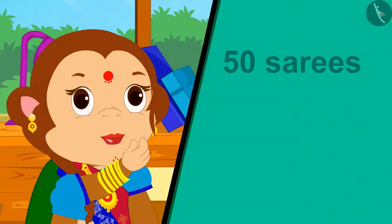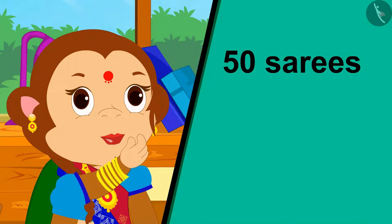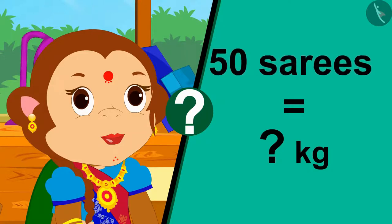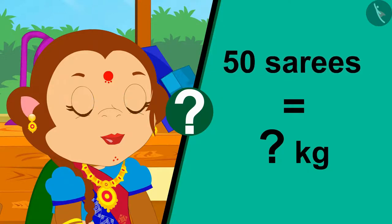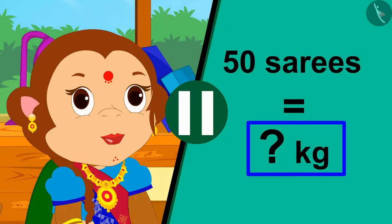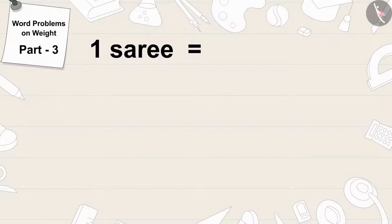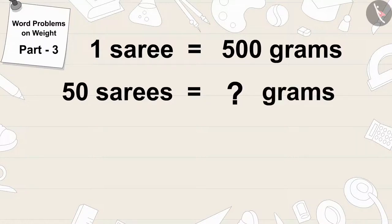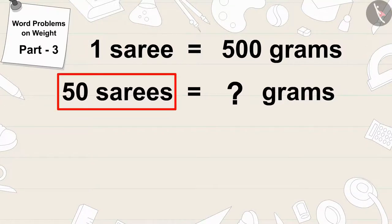Children, can you tell how many kilograms the total weight of these 50 saris will be? If you want, you can stop the video and think about the answer. A sari weighs 500 grams. To find the weight of 50 saris, we have to multiply the weight of one sari by 50.